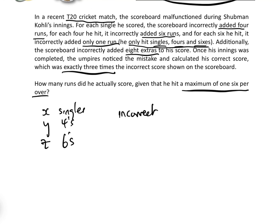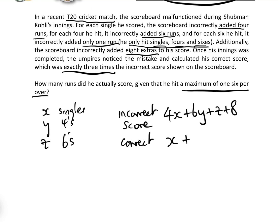Let's look at his incorrect score first. When he hit a single, for each single they added four, so his incorrect score was 4x. For each four, they gave him six runs; and for each six, they only gave him one run; and they gave him eight extras. That was his incorrect score. And his correct score would be: for each single he gets one, for each four he gets four, and for each six he gets six.